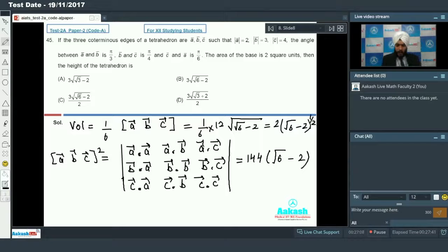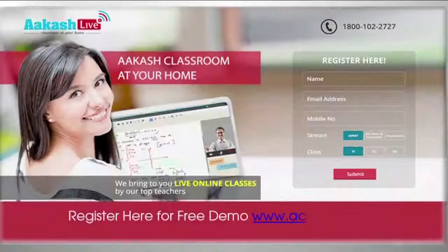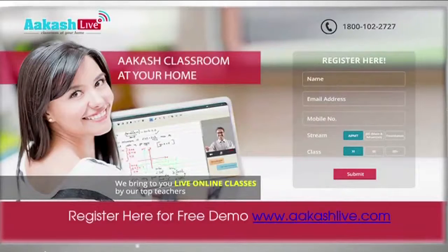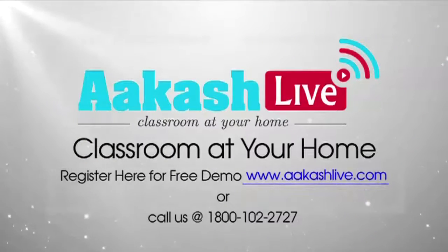Now I require height, so height equals 3 into volume by area of base. Volume is 3 into 2 into root of root 6 minus 2 divided by area of base which is 2. So the final answer comes out to be 3 into under root of root 6 minus 2, which means option B is the right choice. Let us move on to 46.